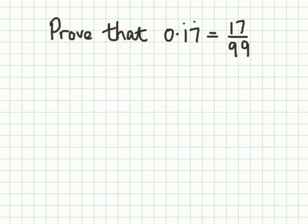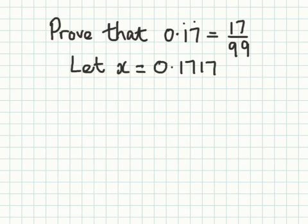Just to show you that it's really the same kind of question no matter how you're asked it, in this case we have prove that 0.17 recurring is 17 over 99. I would still start by writing let x equal and I would write the decimal, 0.171717 and so on.